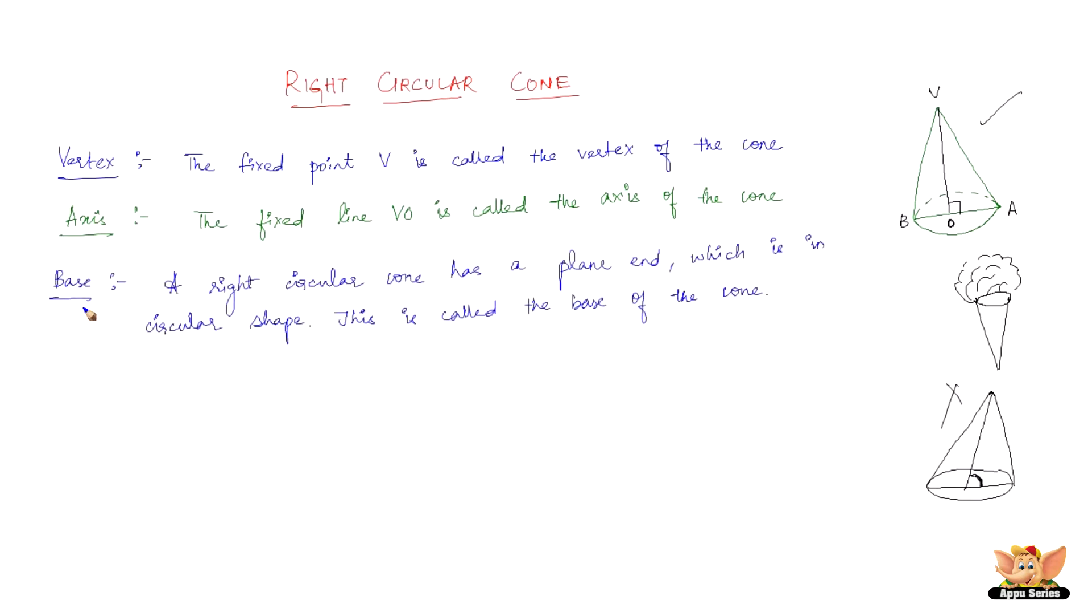The third point is the base. Now a right circular cone such as this has a plain end, this end, which is in circular shape. This is called the base of the cone.